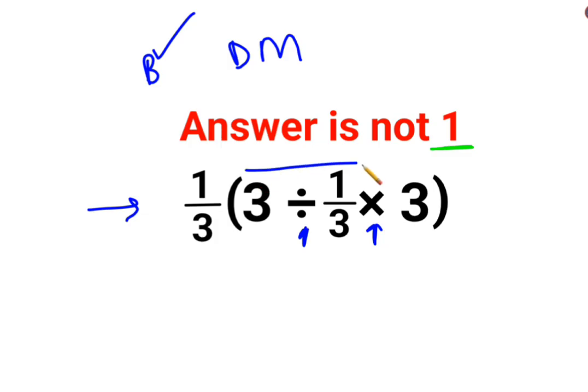First let's focus on this bracket. The bracket is 3 divided by 1/3 into 3. Like I said, division and multiplication hold equal importance, so you have to always follow the rule of left to right. Whatever operation comes first in your question has to be done first.